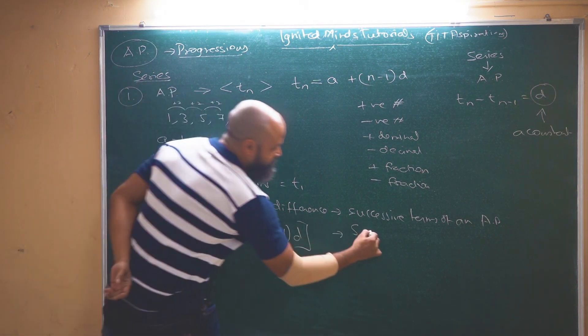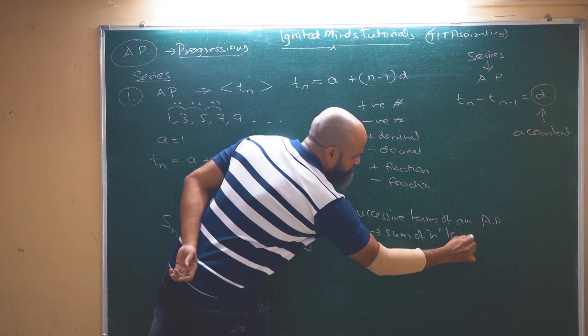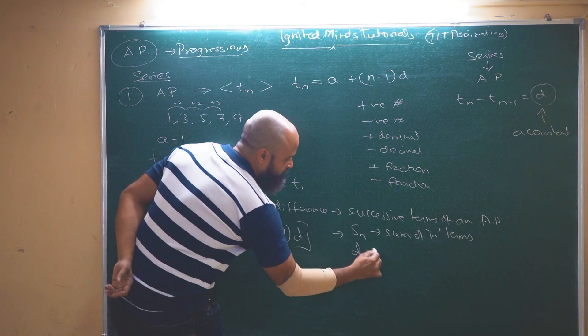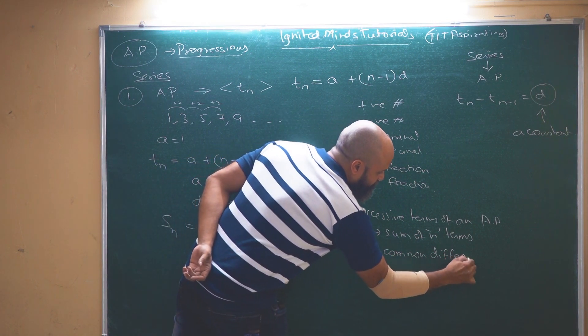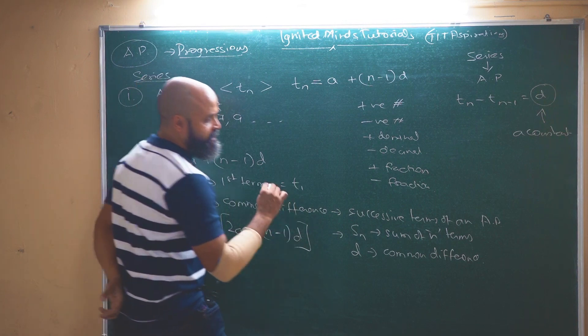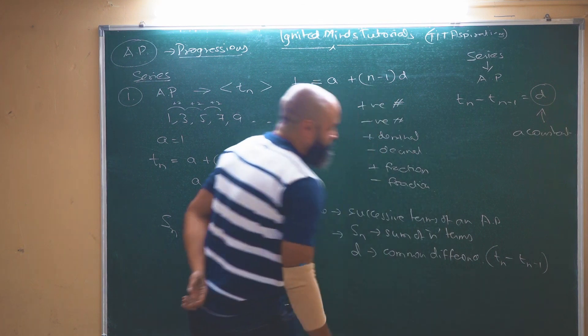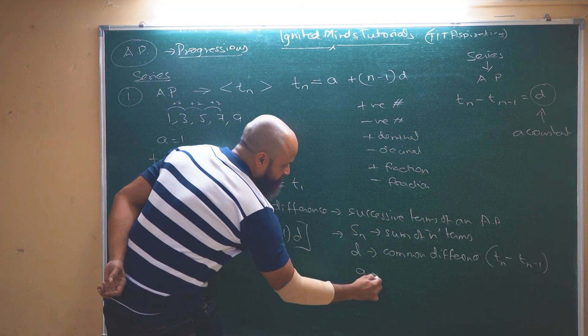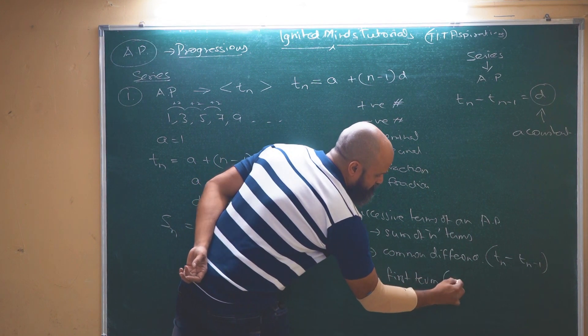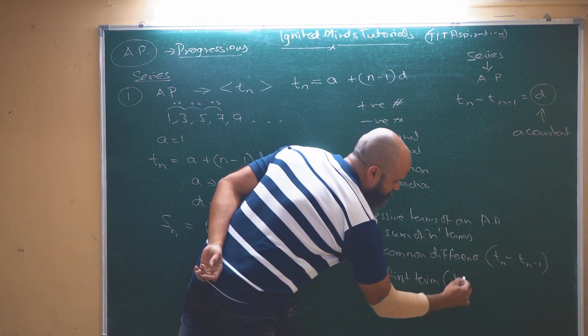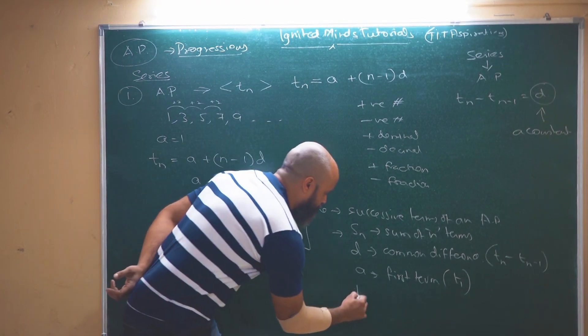So if I have to decode this formula, sn which means sum of n terms, then we have d which means common difference between successive terms. This common difference is basically given by the general formula of tn minus tn minus 1. a is the first term, which is also represented in some books by t1, and then we have n that is number of terms.